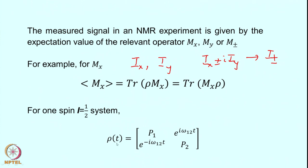Such a one-spin system is clearly not the equilibrium density matrix — in the equilibrium density matrix, populations are non-zero and the off-diagonal elements are zero. Therefore this is clearly a non-equilibrium state created somehow. We will not go into that now and will come to it later when we discuss multipulse experiments. We assume that we have somehow created this coherence between the two energy levels 1 and 2, with the same amplitude for both off-diagonal elements. This is our initial density operator.